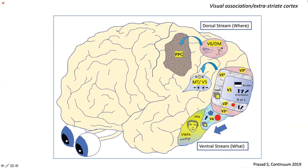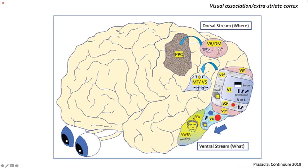In the ventral stream, after initial processing in V1, information goes to V2 ventral, where there is first discrimination of colors and depth. The information then passes to V3 and V4, where the cortex discriminates between colors based on specific wavelengths of light, and also recognizes different geometric shapes. From V4, information goes to the inferior occipitotemporal region — the fusiform gyrus — which contains the fusiform face area for facial recognition and the visual word form area for reading.